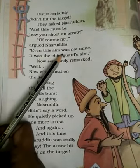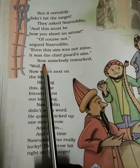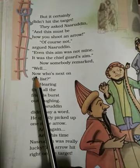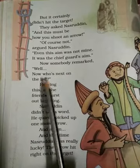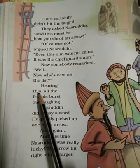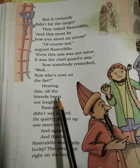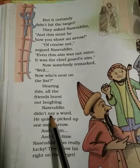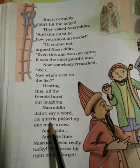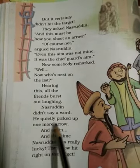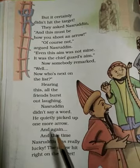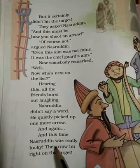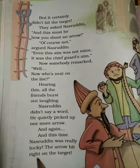They asked Nasruddin, and this must be how you shoot an arrow. Of course not, argued Nasruddin. Even this aim was not mine. It was the chief guard's aim. Now somebody remarked, well, now who's next on the list? Hearing this, all the friends burst out laughing. Nasruddin didn't say a word. He quietly picked up one more arrow, and this time Nasruddin was really lucky. The arrow hit right on the target.